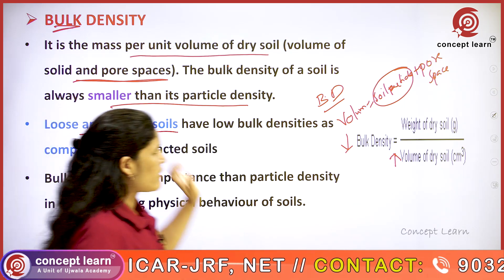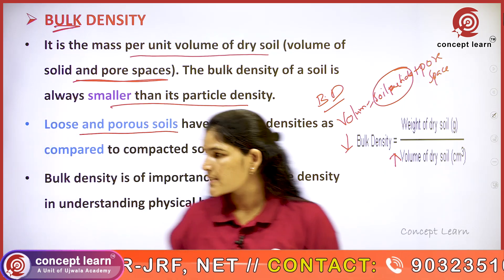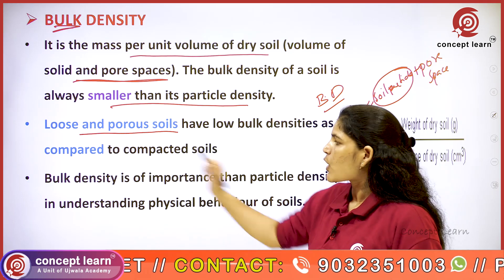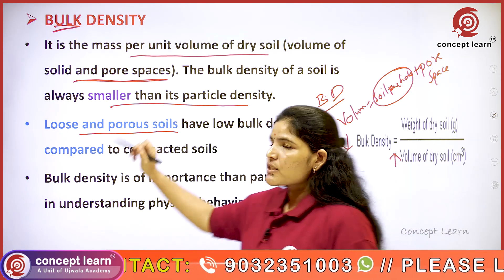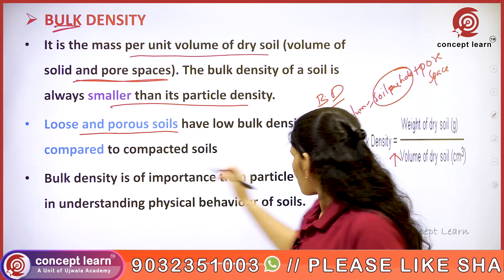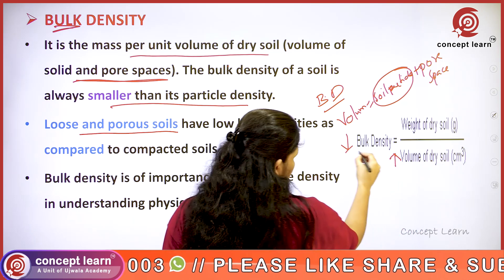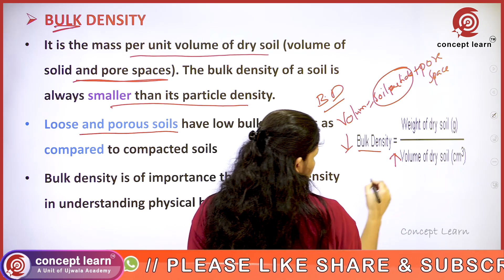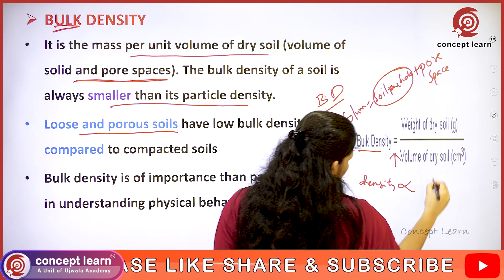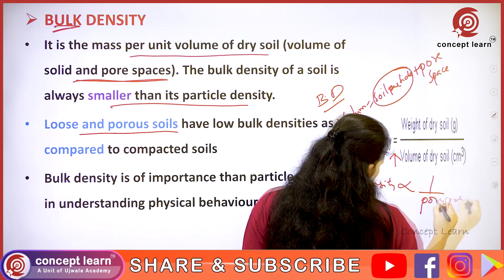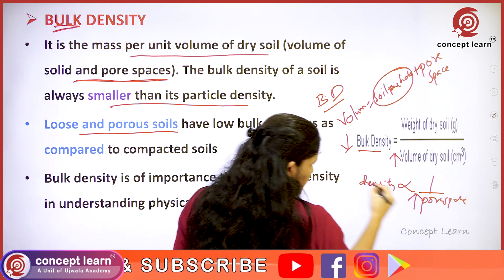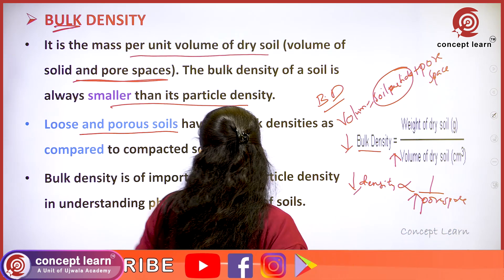Loose and porous soils have a lower bulk density compared to compacted soils. Loose and porous soils means more pore spaces. Pore space is inversely proportional to density — as pore spaces increase, density decreases.